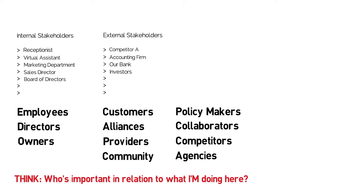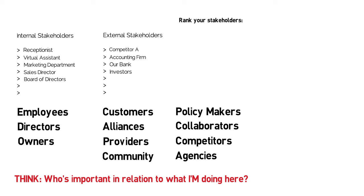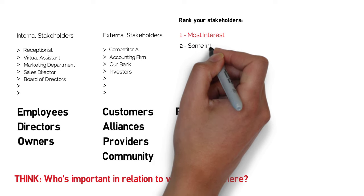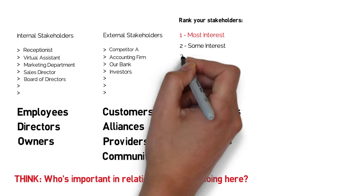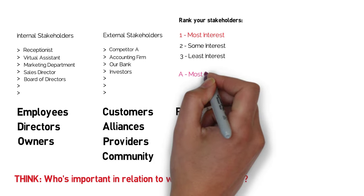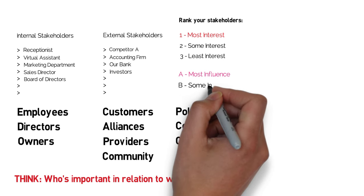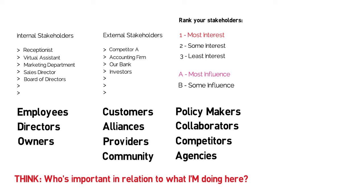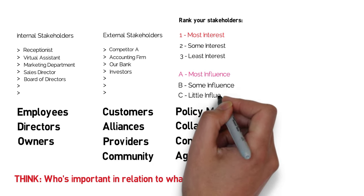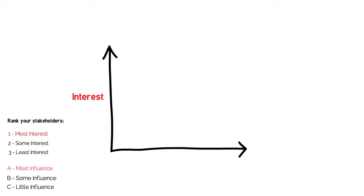When it comes to actually plotting out the graph, I find this is a really useful way to organise your information. I've talked through this in the worksheet that goes along with this video and the podcast episode as well. We want to rank people in terms of interest and influence. We give people with the most interest a number one, with some interest a number two, and with the least interest a number three. Then we do the same thing with influence, using A, B, and C — A for most influence, B for some influence, and C for little influence. You then plot these key stakeholders in relation to where they rank, so they'll end up with a number and a letter as two scores.